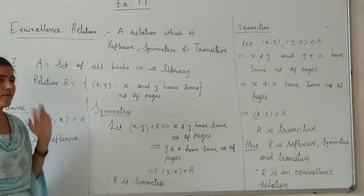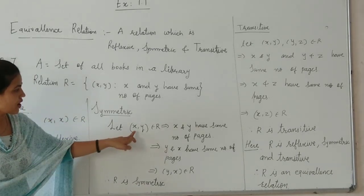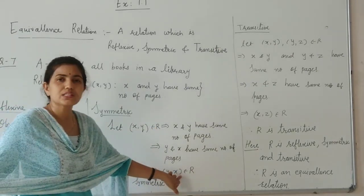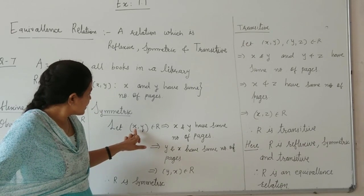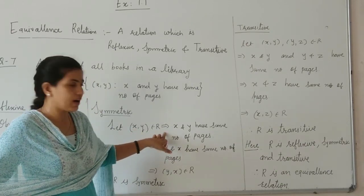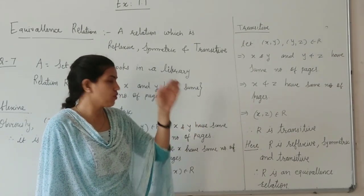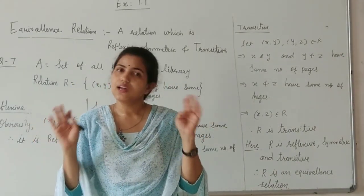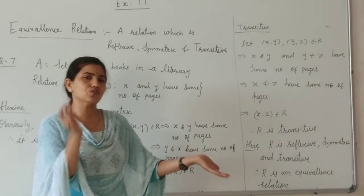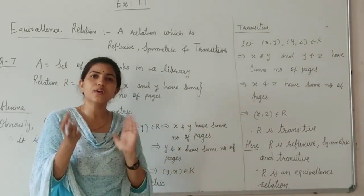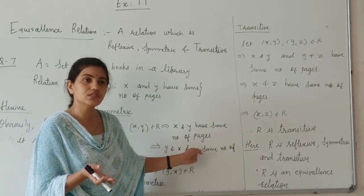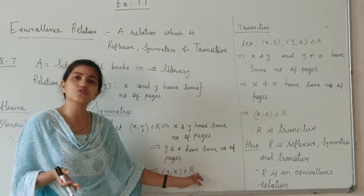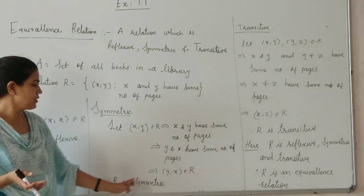Second is symmetric. For symmetric: if (X, Y) belongs to R, then (Y, X) belongs to R. Now if (X, Y) belongs to R, then X and Y have the same number of pages. Obviously if two books have the same number of pages, then whether you consider X and Y or Y and X, both are equal. That means Y and X have the same number of pages, giving us that (Y, X) belongs to R. Therefore R is symmetric.